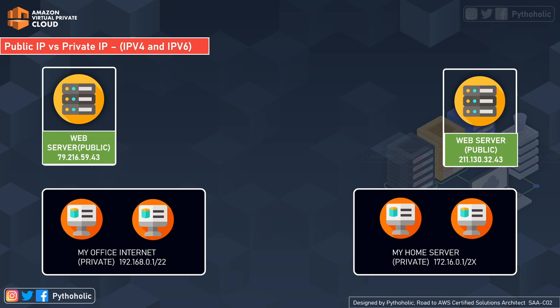Public IPs are IP addresses that can be accessed over the internet. You can think of them as a mailbox number which anyone can access to communicate with you. If you have a public IP, anyone can access the data you are broadcasting if they have sufficient permissions.